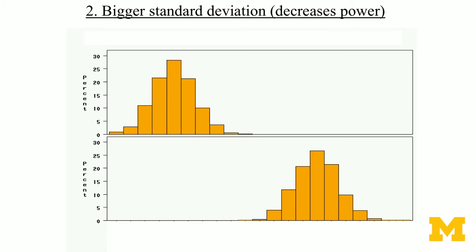The second factor is about the standard deviation, which measures the noise in the data. The bigger the standard deviation, the lower your power will be — standard deviation decreases power. With our null and alternative distributions, noisier data means the distributions are fatter. If they become fatter, other things being equal, there will be more overlapping regions, making it easier to make inference errors. That's why it decreases power.